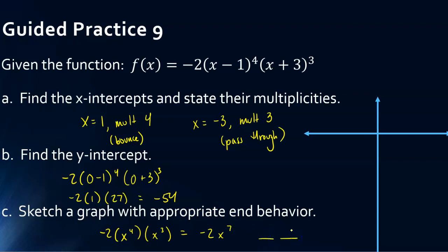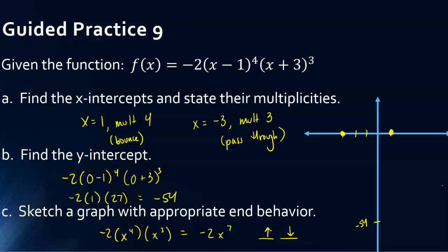So for the end behavior: the negative leading term means the right side goes down, and the odd exponent means the left side goes in the opposite direction — so up. Putting it all together: x-intercept at negative 3, x-intercept at 1, y-intercept at negative 54. The left side goes up, the right side goes down. The graph passes through negative 3 and then bounces off at 1.